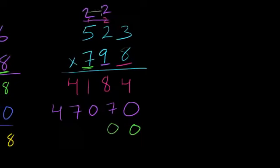Let's get rid of this stuff. 7 times 3 is 21, put the 1 there, stick the 2 up there. 7 times 2 is 14, 14 plus our 2 is 16. Put the 1 up there. 7 times 5 is 35 plus 1 is 36.